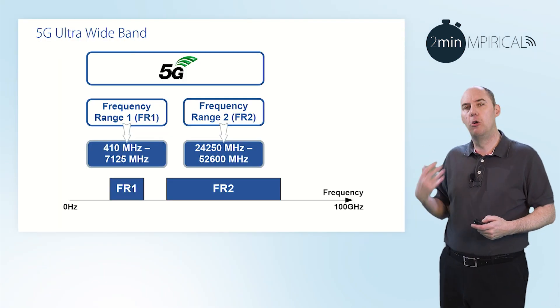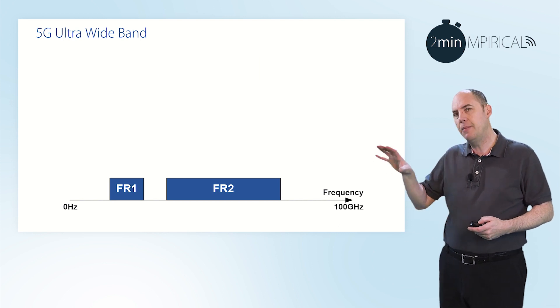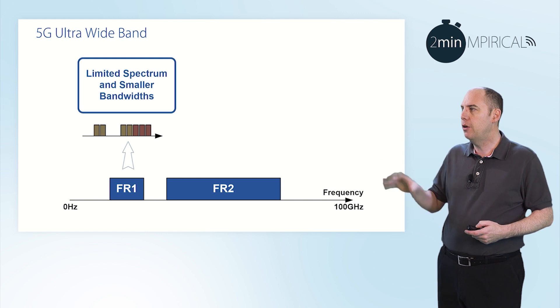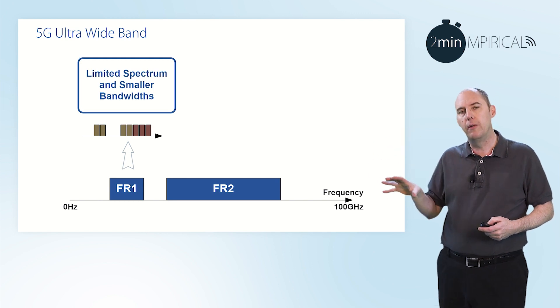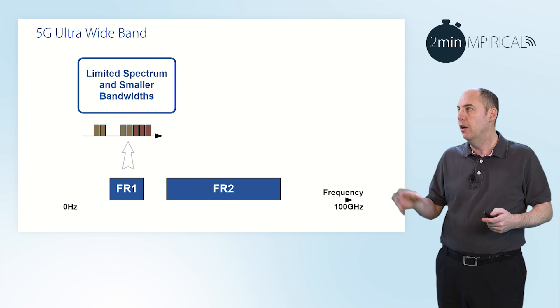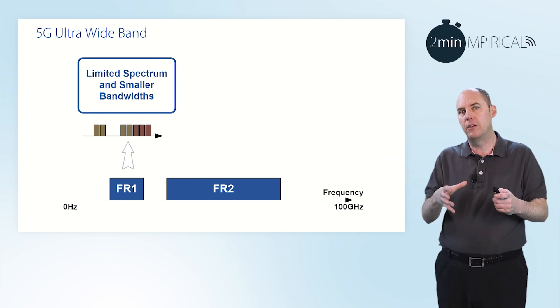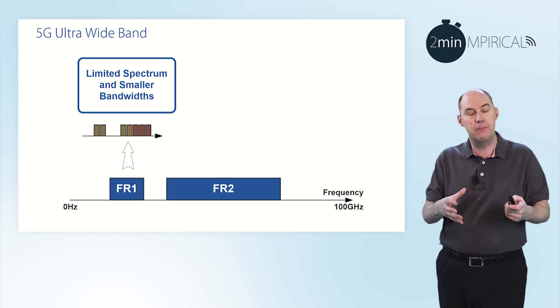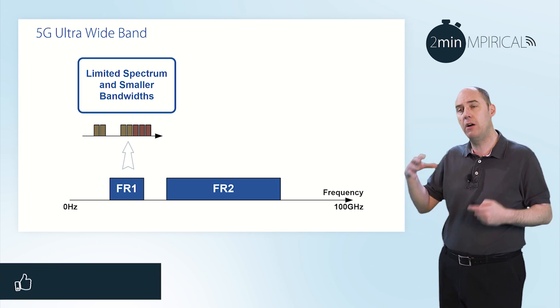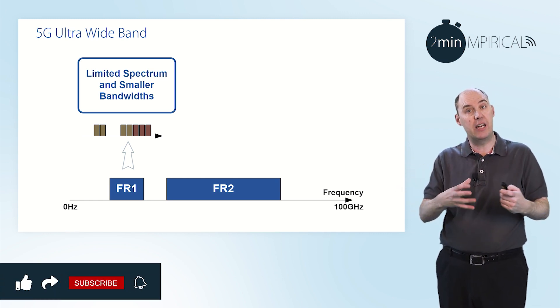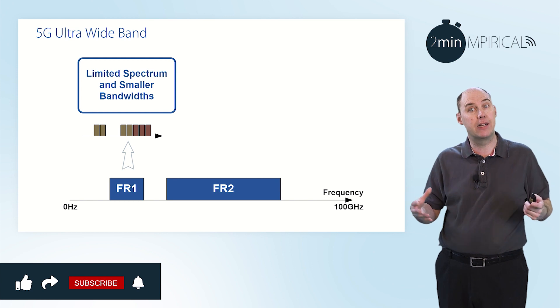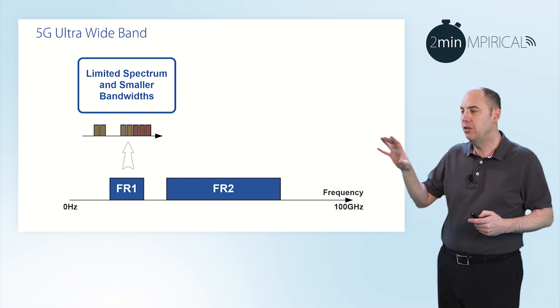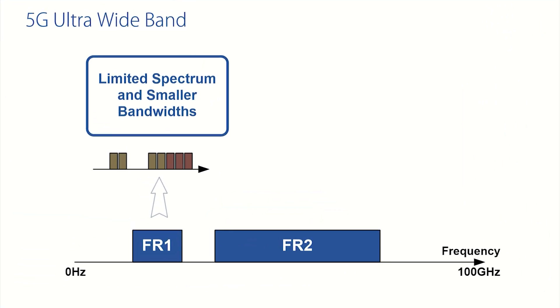So where does the word ultra wideband come from? Thinking about these two frequency ranges, if you look at frequency range one, the various bands you would deploy in, you might find smaller channels typically. Going back to the 4G network, you'd be talking about 20 megahertz channels, and more recently you might find some 30, 40, or 50 megahertz channels with respect to 5G, but they are relatively small. What you can do is aggregate some of those together — called carrier aggregation — to get a higher data rate. The different colours potentially represent different service providers having different amounts of spectrum.